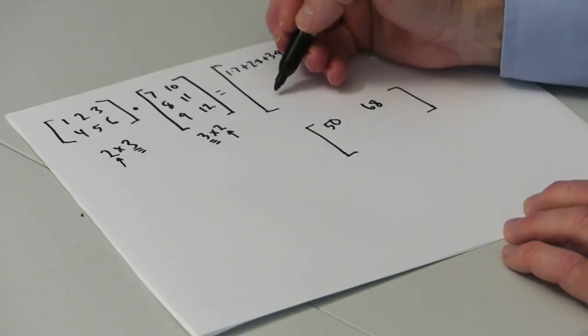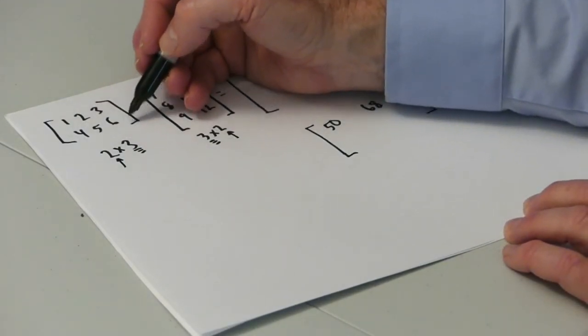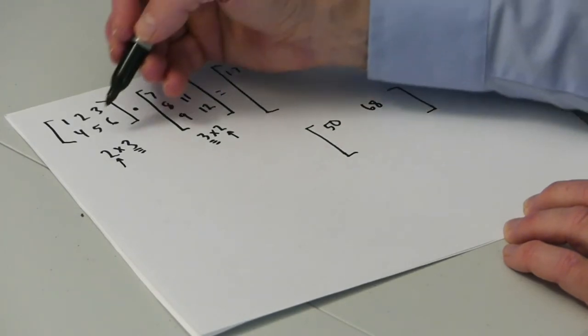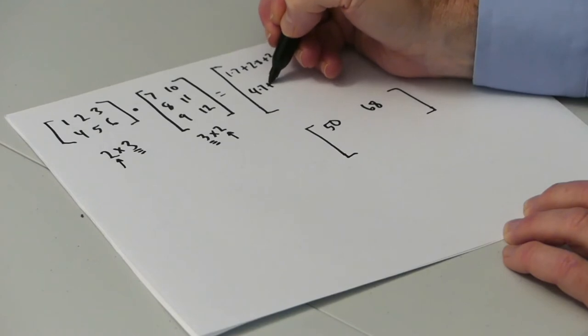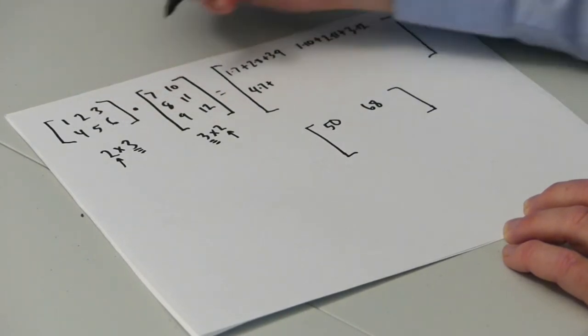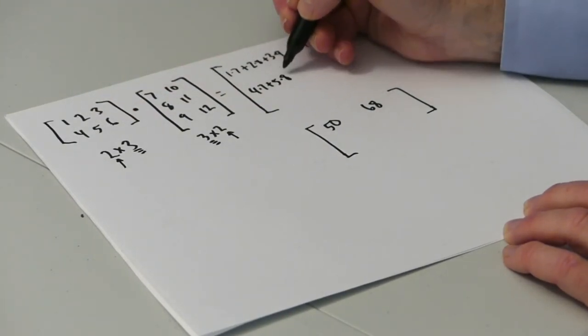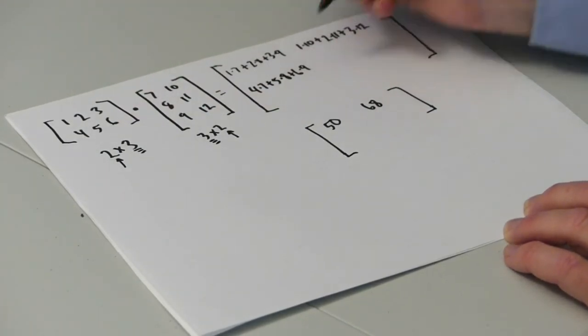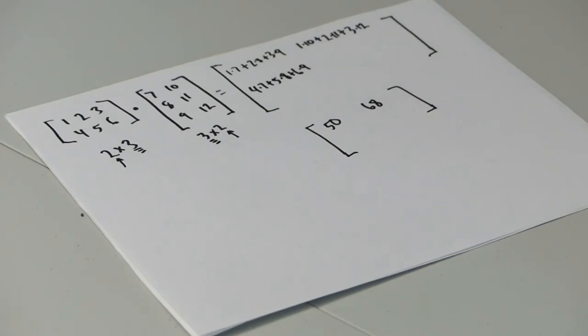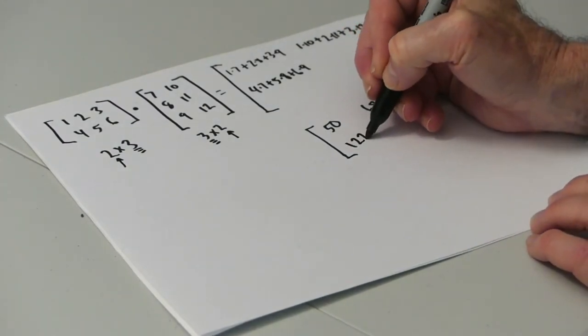Row 2 column 1 is the dot product of row 2 and column 1. 4 times 7 plus 5 times 8 plus 6 times 9. 28 plus 40 plus 54 adds up to 122.